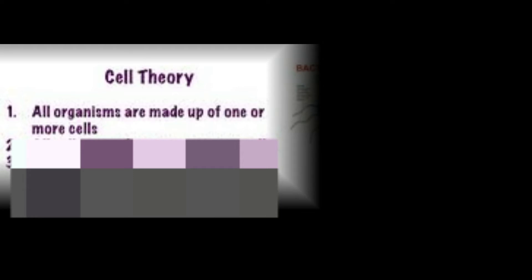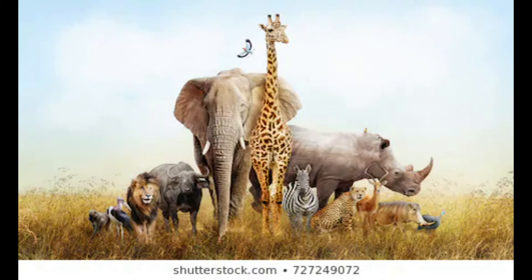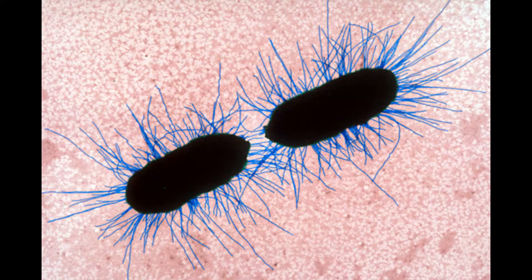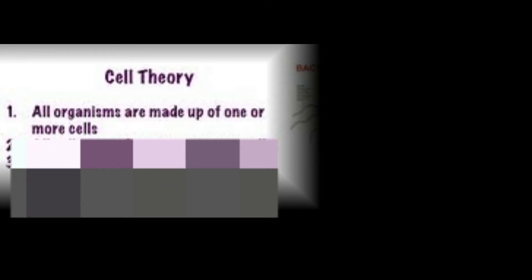The three components of cell theory are these and you need to memorize them — they need to be embedded in your brain. Number one: all organisms, all of them, are made up of one or more cells. That means all living things — all plants, all animals, all single-celled organisms, multi-celled organisms — all of them are made up of one or more cells.